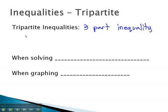We use a tripartite inequality when our variable is between two numbers. For example, if I write 2 is less than x is less than 7, our variable x is between 2 and 7.